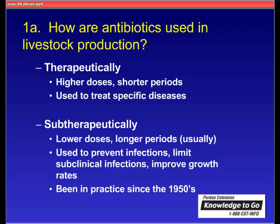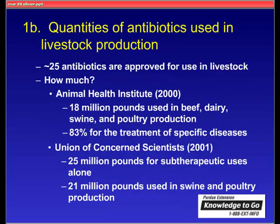This practice has been in use since the 1950s, shortly after the introduction of widespread antibiotic therapy in human medicine. In terms of quantities used in livestock production, it's difficult to get a good handle on that figure because those data aren't readily available from pharmaceutical companies. Currently, there are about 25 different antibiotics approved for use in livestock production. Not all drugs are approved for all livestock species — for instance, laying hens have only a limited number of drugs available, while upwards of 25 different antibiotics can be used in beef production.